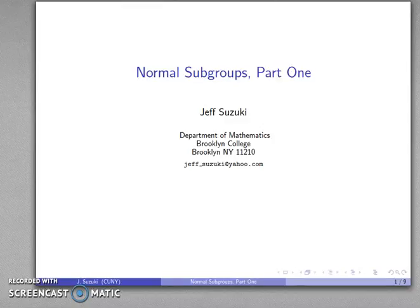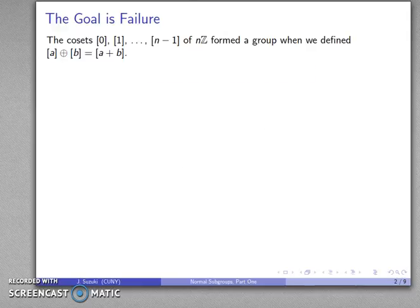So in order to turn our set of cosets into a real group we have to introduce one more important concept which is that of a normal subgroup, and we can view this as the following: our goal is to fail to produce a group and see what we have to do in order to succeed.